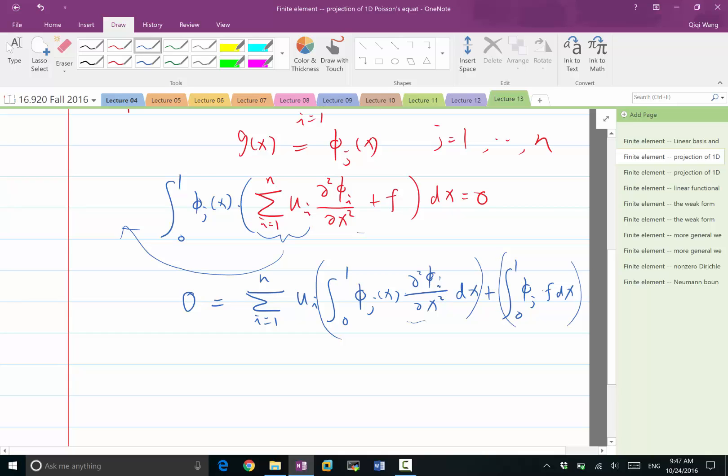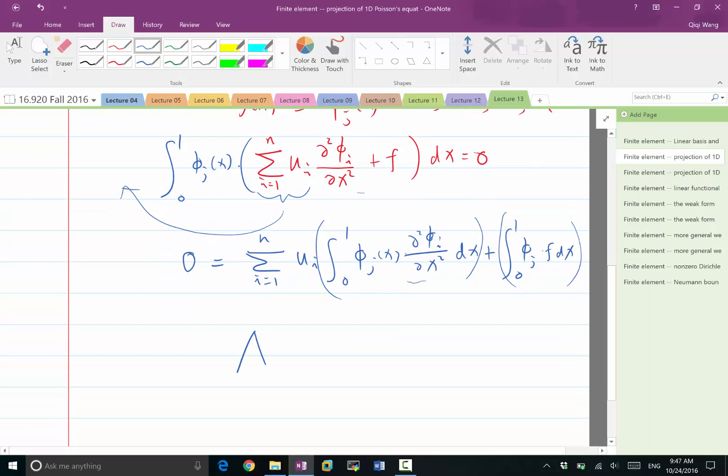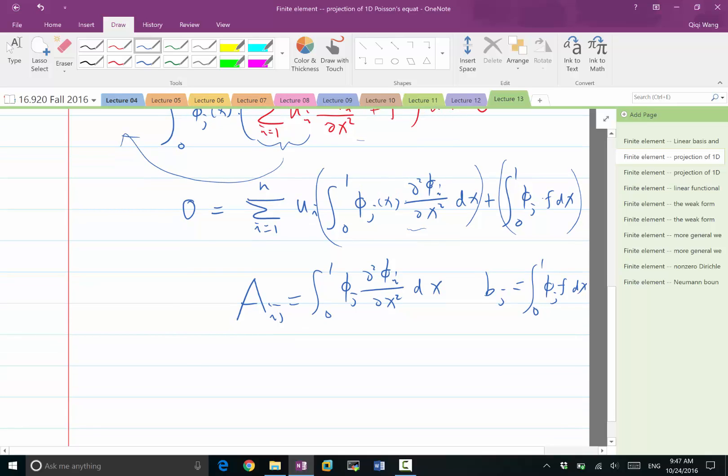This and this is represented as a matrix and a vector, respectively. So if I define aij to be equal to integration of phi j times the second-order derivative of i, I am going to say bj is equal to the integration of phi j times f, then this equation turns into a matrix equation a u plus b equal to 0. And that is something I know how to solve.